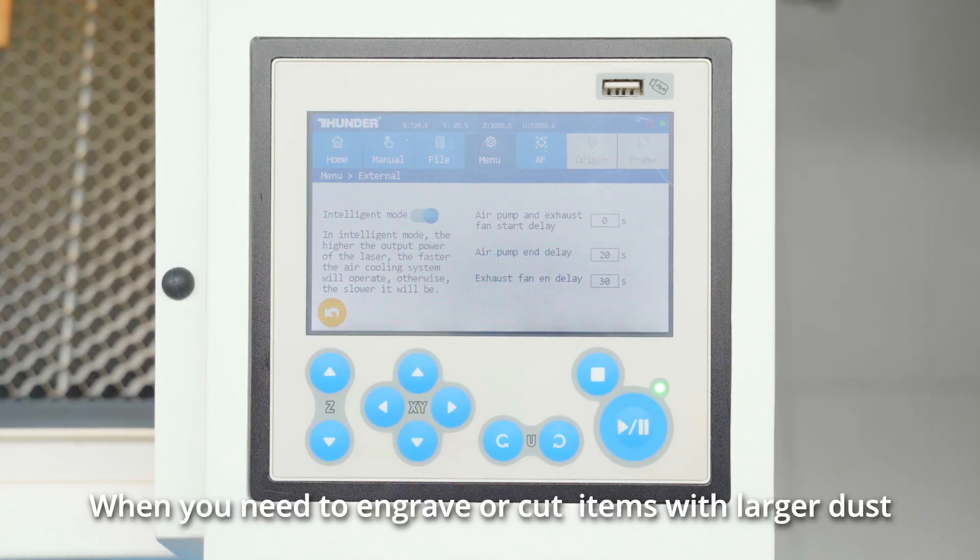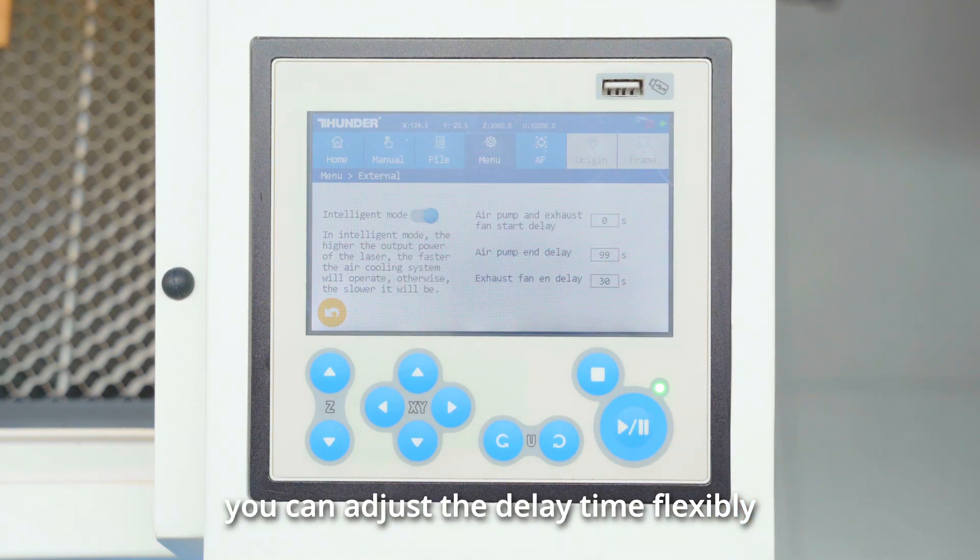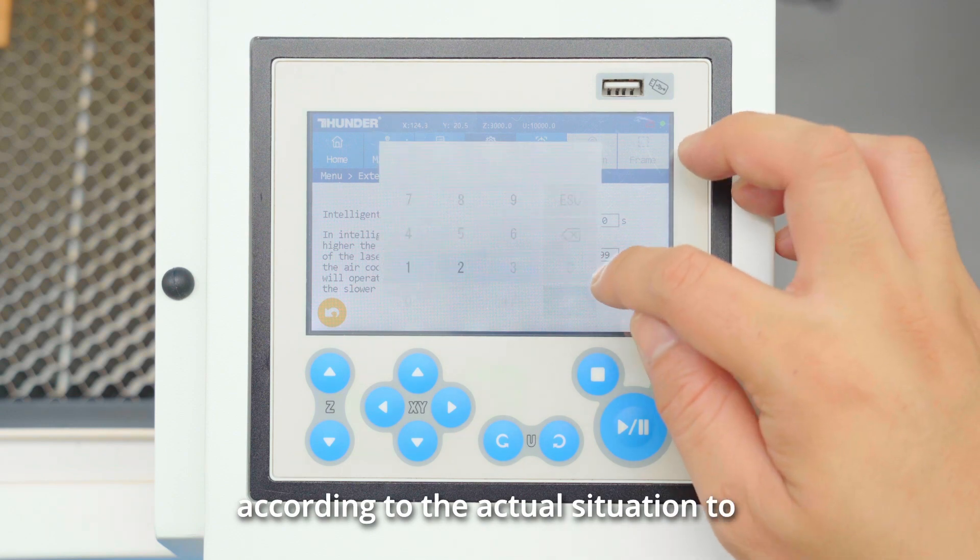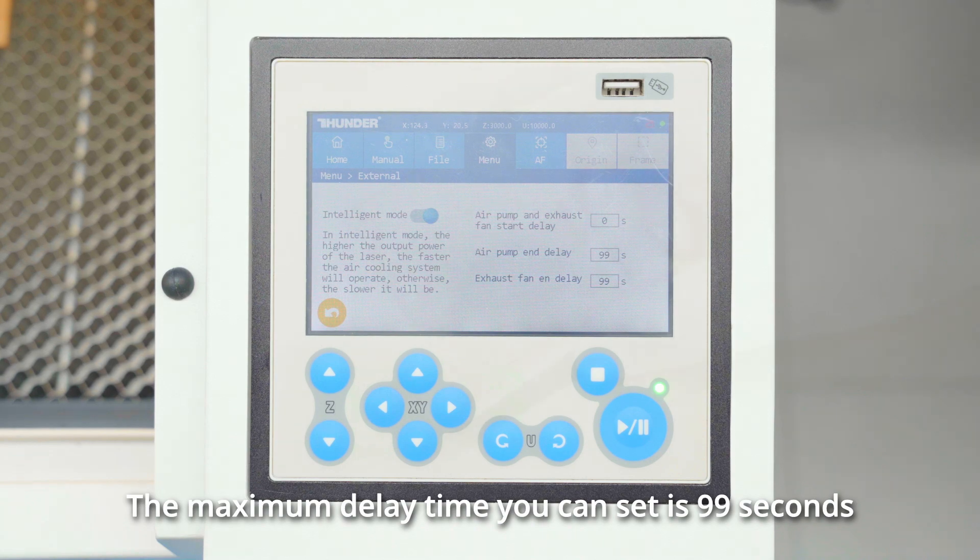When you need to engrave or cut items with larger dust particles or strong odors, you can adjust the delay time flexibly according to the actual situation to help you achieve a more perfect result. The maximum delay time you can set is 99 seconds.